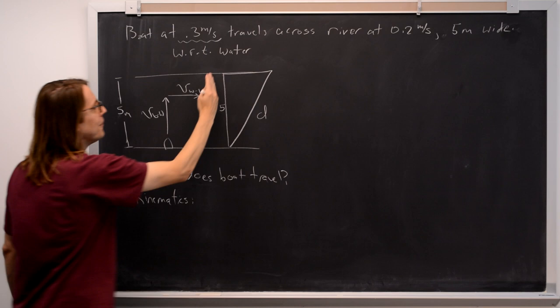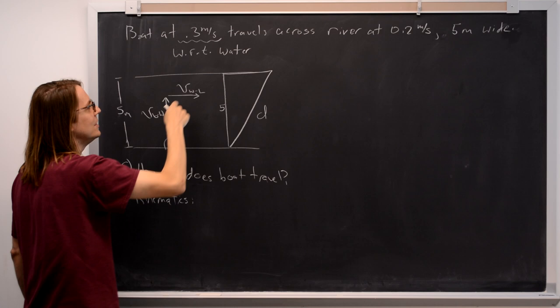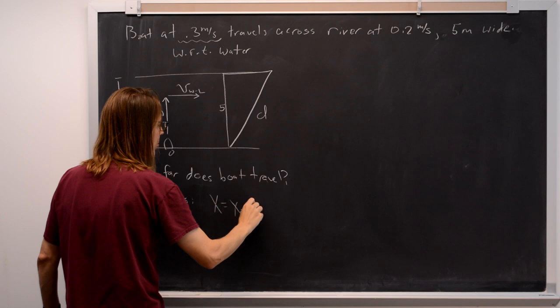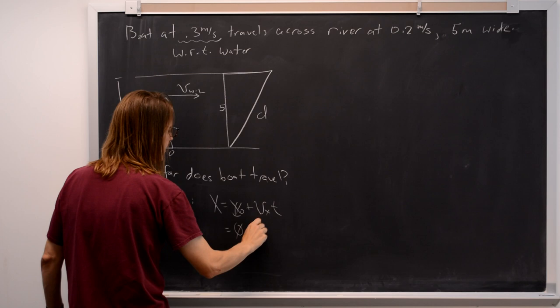We know the velocity that way, it's 0.2 meters per second, we just need to know the time. So let's see kinematics. x equals x initial, we're going to call this the origin, so there's no x initial, x naught plus vx times t. So that's zero plus vx we know is 0.2, but we don't know time.